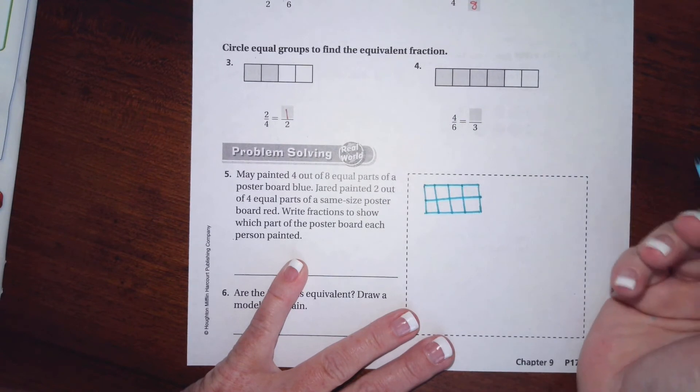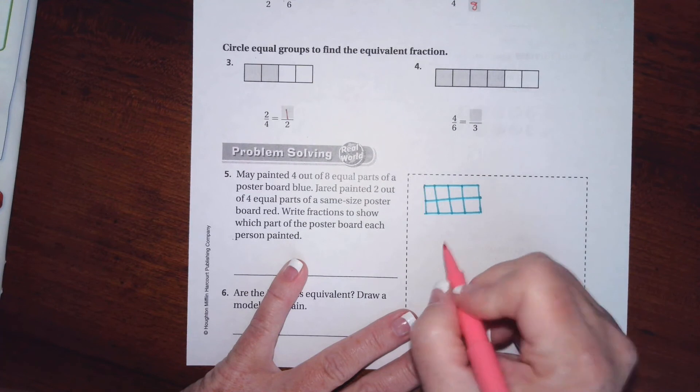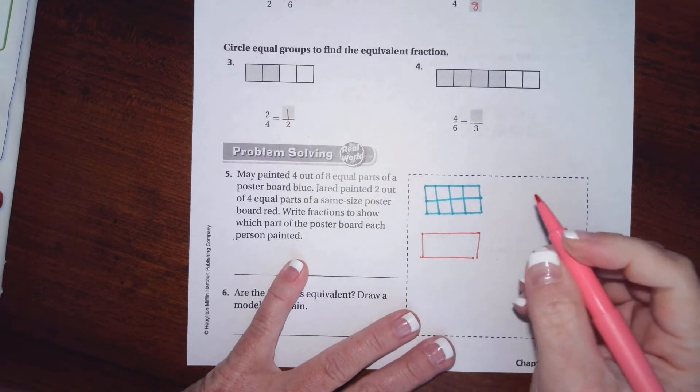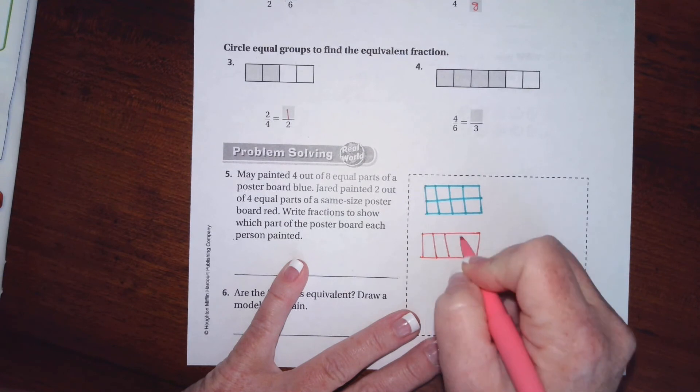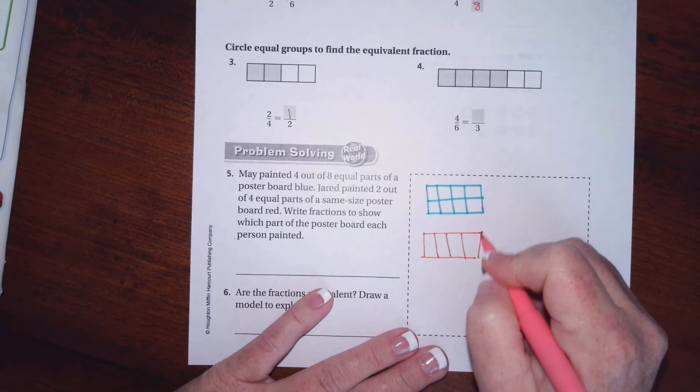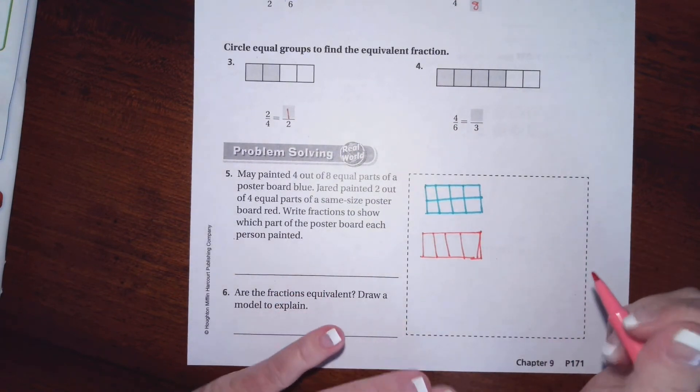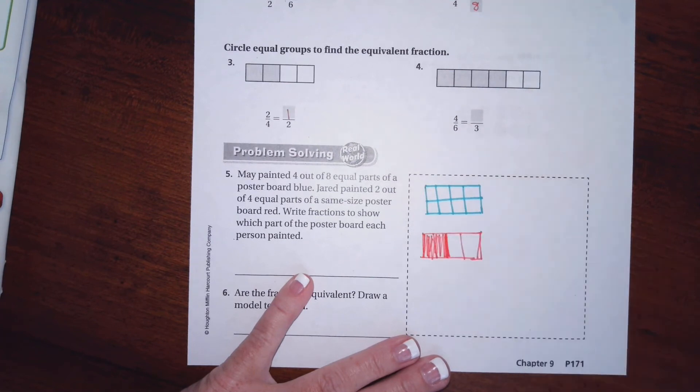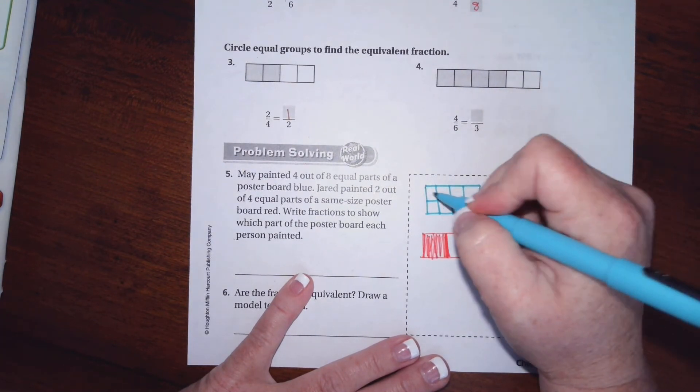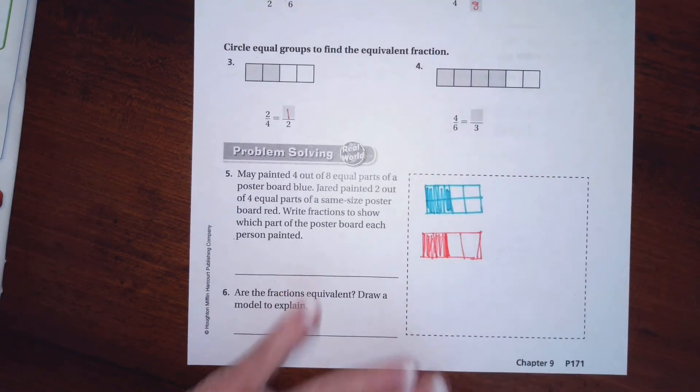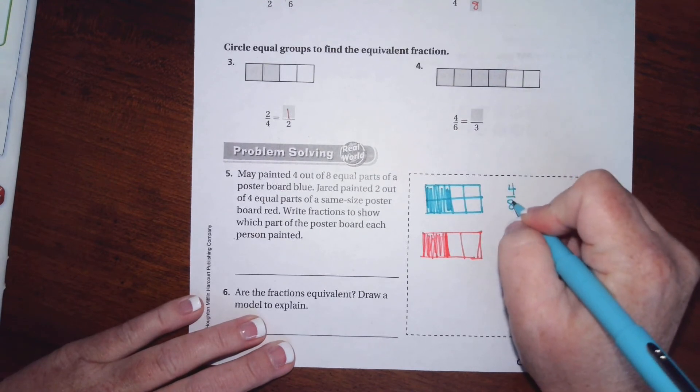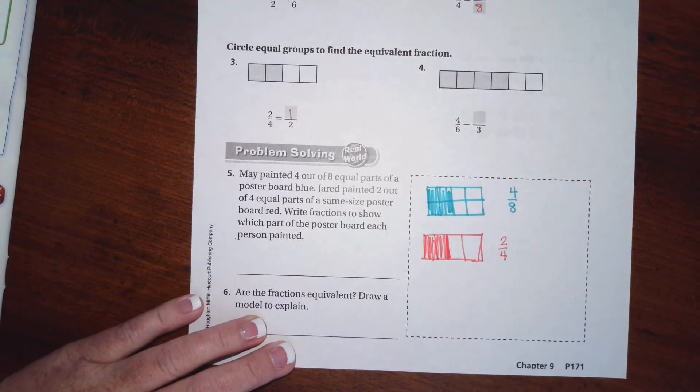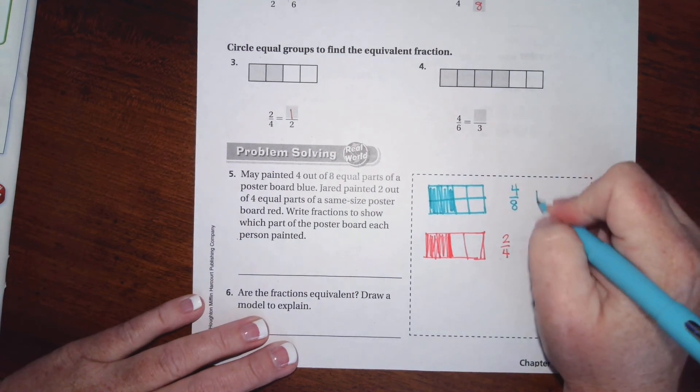So there's eight. Obviously not perfectly to scale because Miss Lee is not an artist, however we'll get an idea. Jared did two of these. May painted four.